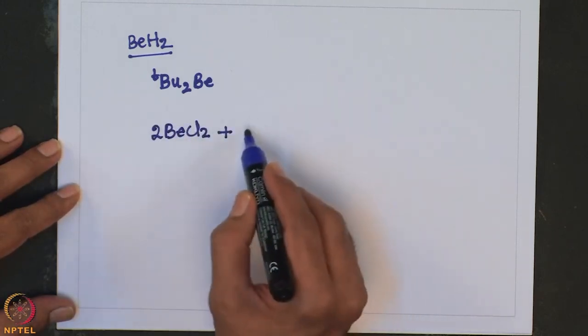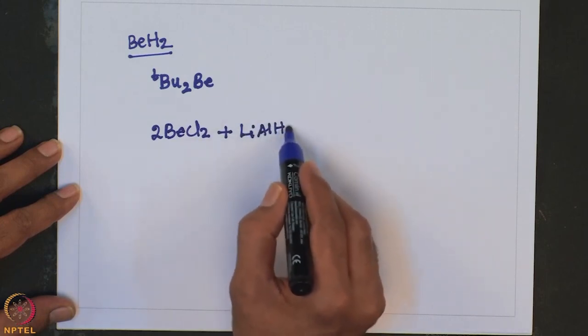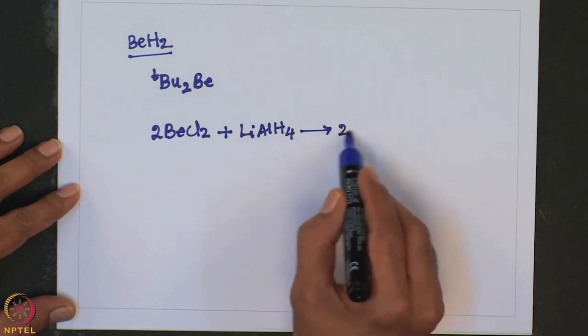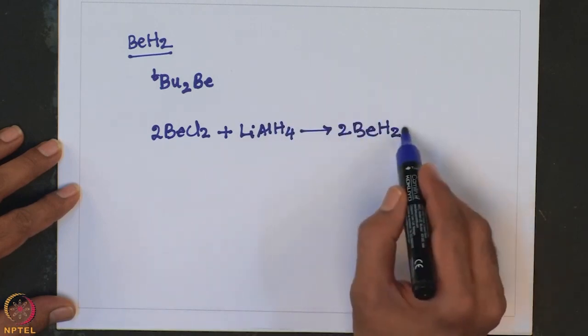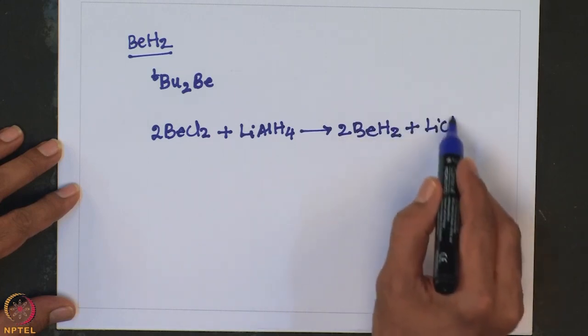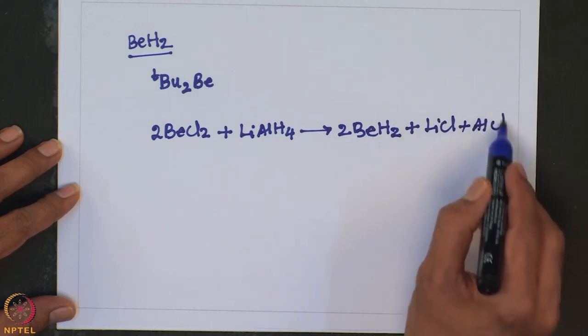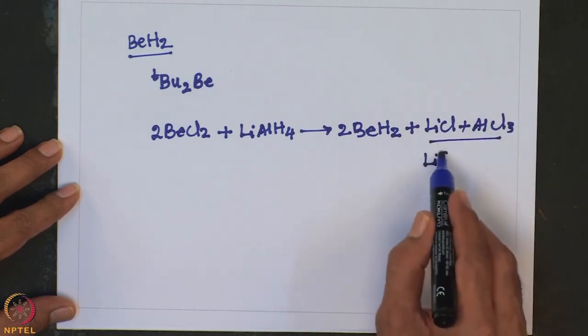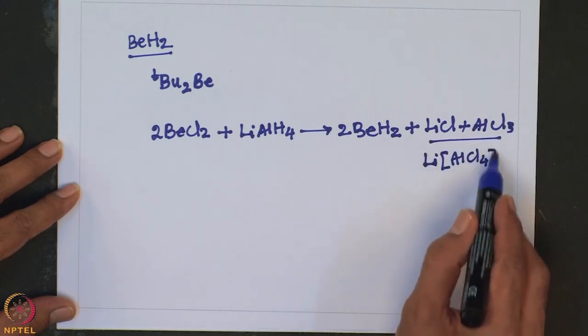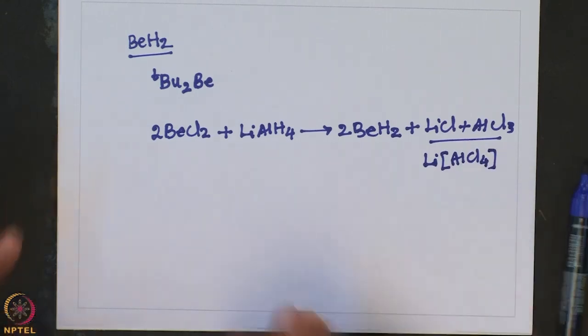Beryllium chloride on treatment with lithium aluminum hydride gives beryllium hydride plus LiCl plus AlCl3, or more conveniently written as AlCl4 minus. One should remember that these hydrides are extremely reactive and react readily with water. As a result, these reactions must be carried out in non-aqueous medium, in dry organic solvents, and the incorporation of moisture and oxygen should be excluded at all stages.